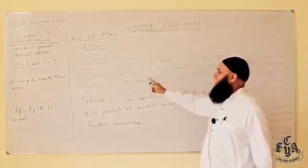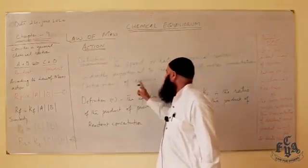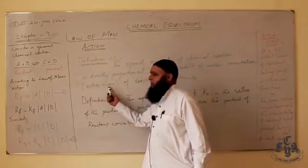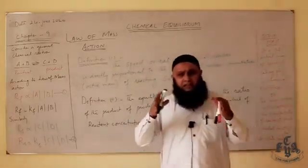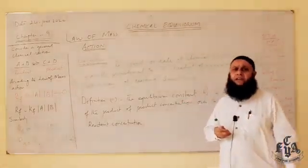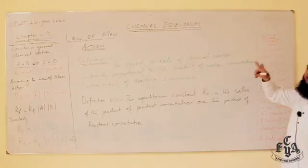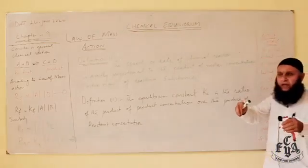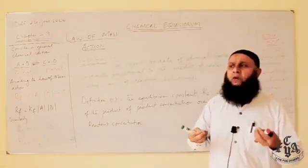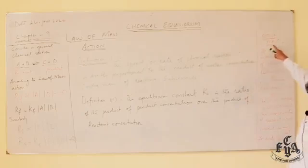There are two definitions of this law. Definition number one: the speed or rate of a chemical reaction is directly proportional to the product of molar concentration, or active mass, of the reacting substances. Active mass refers to the actual amount of reactant taking part in a chemical reaction — the reactant which is actually used up in the reaction.